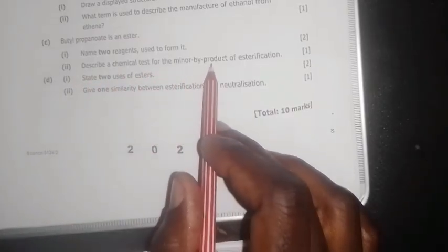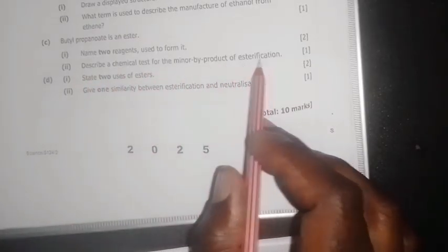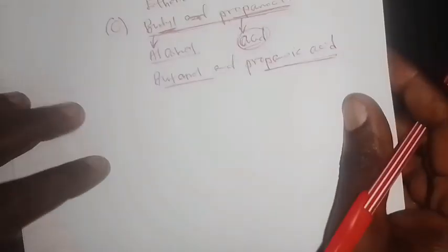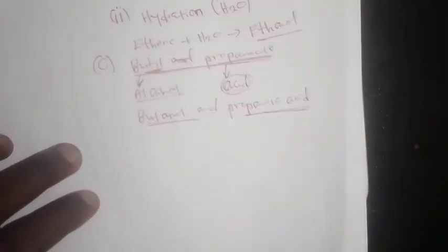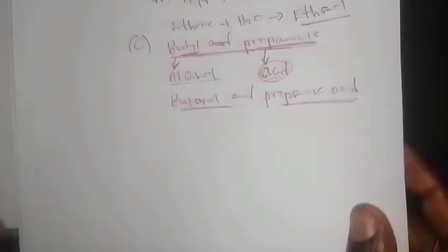Now: describe the chemical test for the minor byproduct of esterification. The minor byproduct of esterification is water. So how do you test that water has been produced?